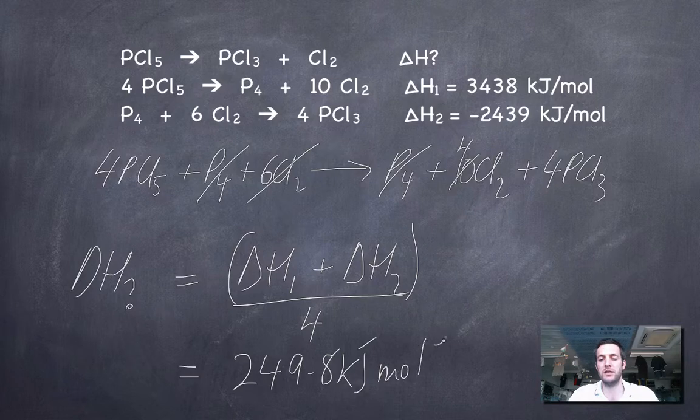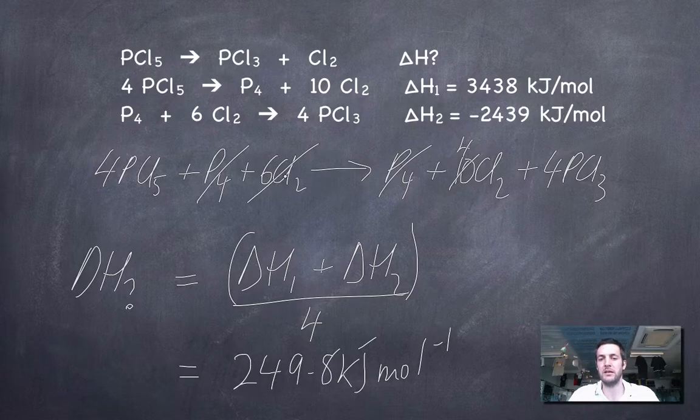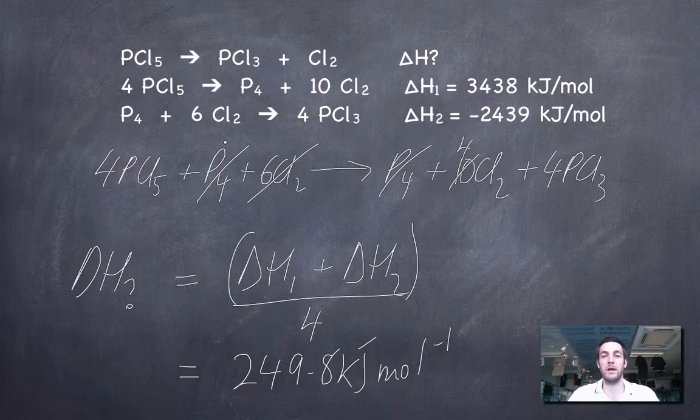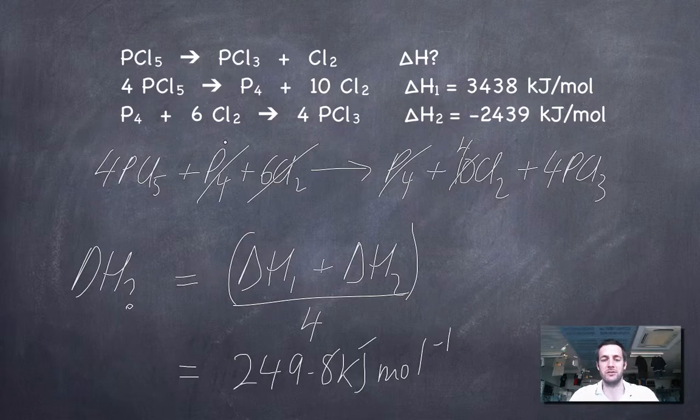And what you might also notice here is the way that the things that are canceling—these chlorines in particular—they were the things that we had to add to one corner or another in the cycle process. But anyway, once again we're getting the same answer using this, what I'm going to call the standard level mathematical method for Hess's law calculations, even though both methods really are mathematical.